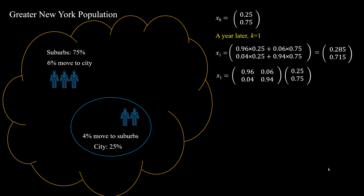It's simple to calculate that after one year, the city's population would be 0.96 × 0.25 plus 0.06 × 0.75, and that of the suburbs will be 0.04 × 0.25 plus 0.94 × 0.75. Therefore, we get x1. Recall what we have learned about matrix multiplication — this looks like a dot product of two matrices. We can rewrite x1 in the form of matrix multiplication, in which the left matrix is a square matrix we call A, and the right matrix is the vector x0. In the first column vector of A, the first element is the percentage of the population in the city that stays after one year, while the second element is the percentage that moved from the city to suburbs. Similarly, in the second column vector of A, the first element is the percentage from suburbs to the city, and the second element is the percentage that stayed in the suburbs.